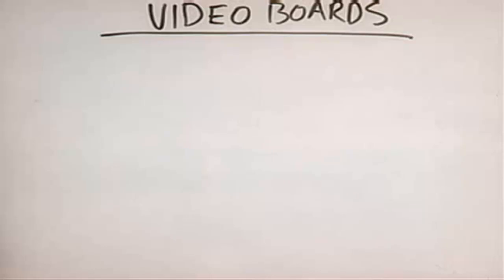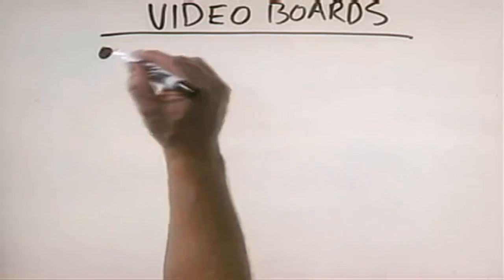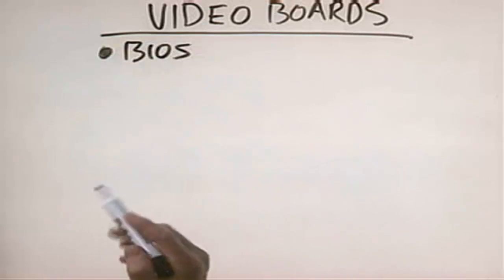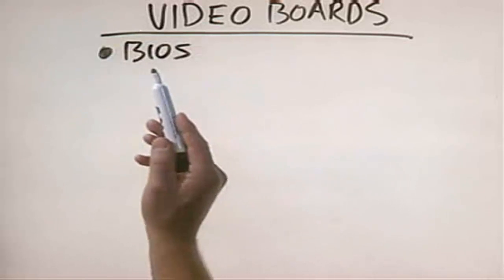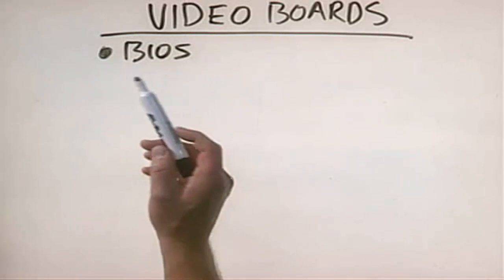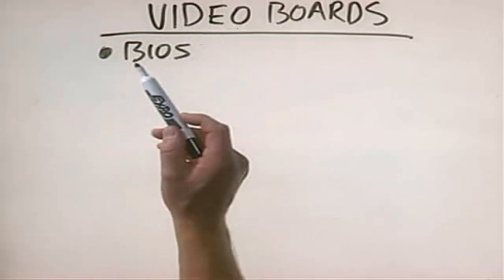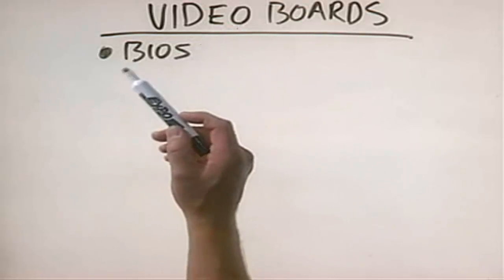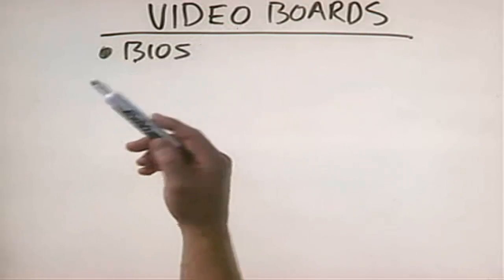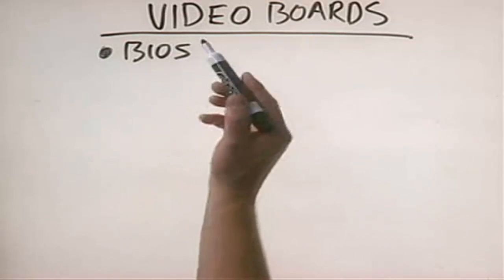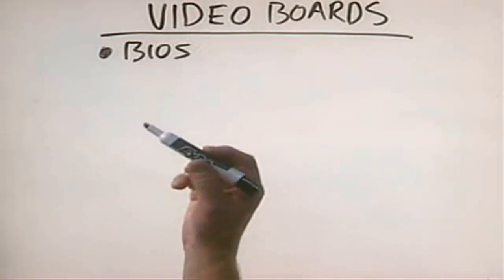Let's take a look at the components that make up a typical video board. The first component is the BIOS. When I say BIOS, I'm not talking about the BIOS on the motherboard. The video board has its own BIOS that, when the system is booted up, inserts itself so that the CPU can address the video board and send data to it.